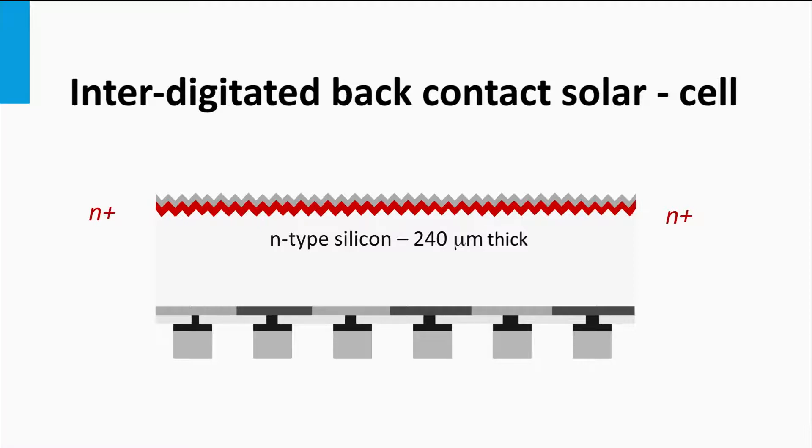The front surface field behaves like a passivation of the defects at the front interface and allows to have higher levels for the hole minority densities in the P-doped bulk.